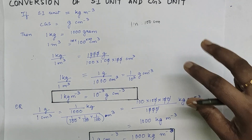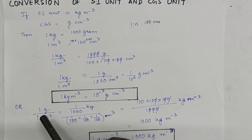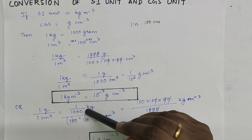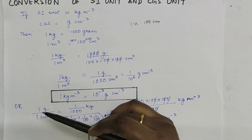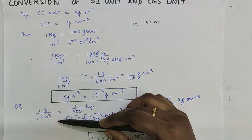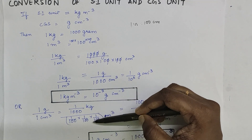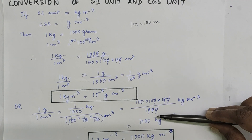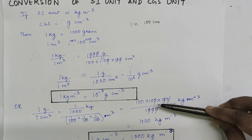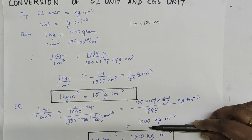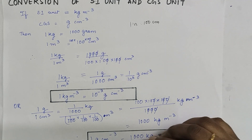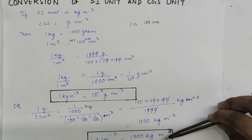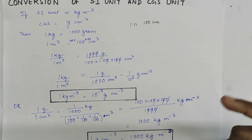Converting CGS to SI: 1 gram equals 1/1000 kg, and 1 cubic centimeter equals (1/100)×(1/100)×(1/100). Taking the reciprocal, we are left with 100×100×100 divided by 1000, which equals 1000. So 1 gram per centimeter cube equals 1000 kg per meter cube. You will need to use this conversion when solving numericals based on the SI and CGS units of density.